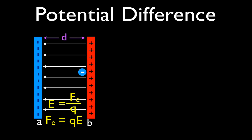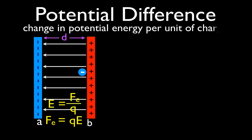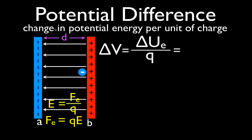Now, electric potential difference — the definition is the change in potential energy per unit of charge. So here we have this charge which we can move back and forth between these plates, and the potential difference is the change in potential energy of this charge per unit of this charge. Potential has the symbol V; potential difference is delta V. The equation is: potential difference equals the change in electric potential energy, delta Ue, divided by the amount of charge moved between those plates.